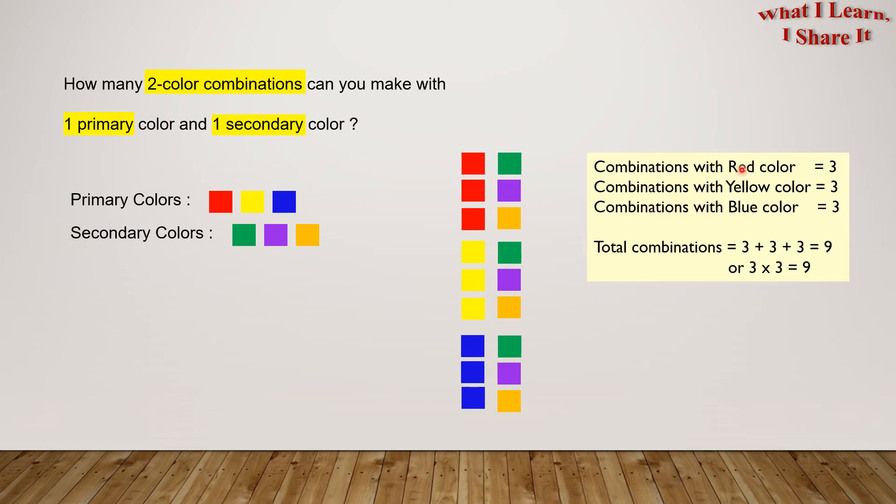Combinations with the color red equals 3, as we see here. Combinations with the color yellow equals 3, as we see here.